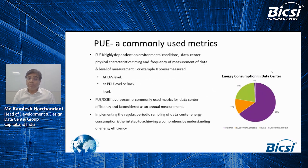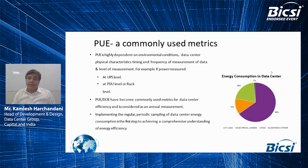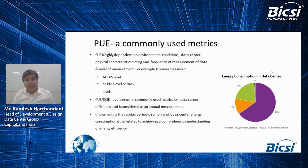Let's talk about PUE — Power Usage Effectiveness. The ratio of PUE is the total facility power for the data center divided by IT load. PUE was introduced by the Green Grid in 2007. We can check the total facility power requirement; however, to measure the IT load, there are three levels: one at a UPS level, second at a PDU level, and third at a rack level. This is how you calculate your PUE for your data center facility.